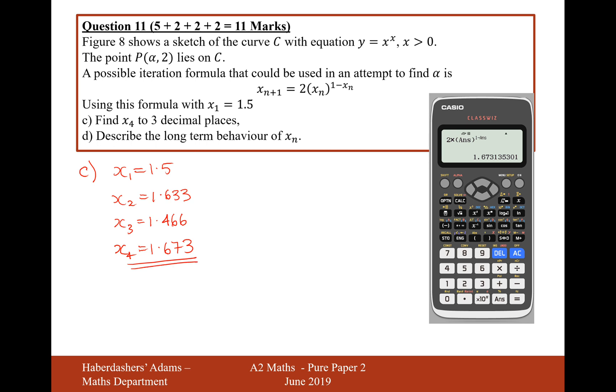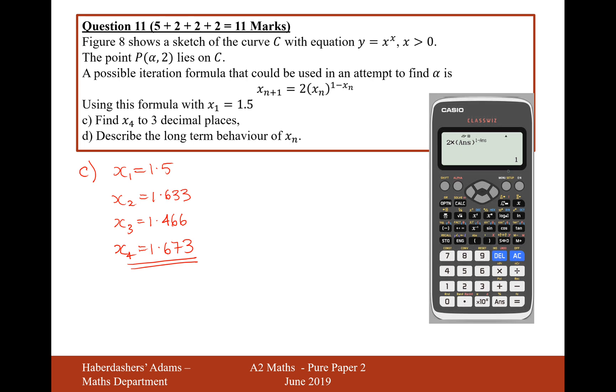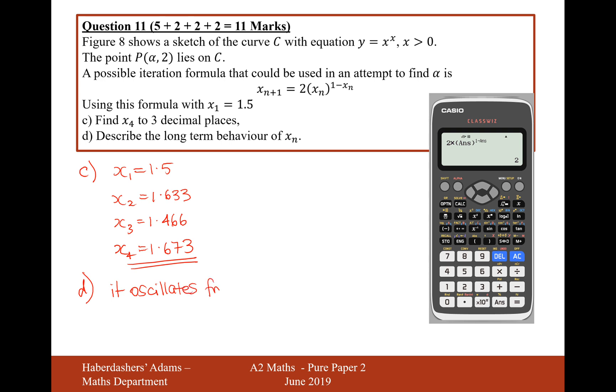Part d is describe the long-term behavior of xn. Now, what we'd be hoping here is that as we continue on our solutions, they will tend more and more towards the solution to this equation. But if we do keep on just pressing the equals button, then it will go to 1. And if we press equals again, it will go to 2. If we press equals again, it will go to 1. And if we press equals again, it will go to 2. So, describe the long-term behavior of xn.